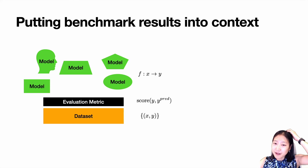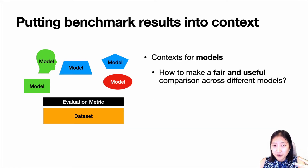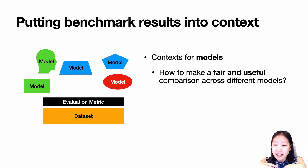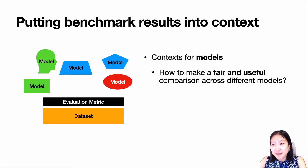In the first part of the talk, I'm going to discuss how to consider the context of different models when comparing them. Models are not all the same — they have different characteristics, use different amounts of resources, and are built with different assumptions. How can we provide a more fair and useful comparison when most benchmarks only focus on the evaluation metric of final performance? We'll particularly look into resource constraints.